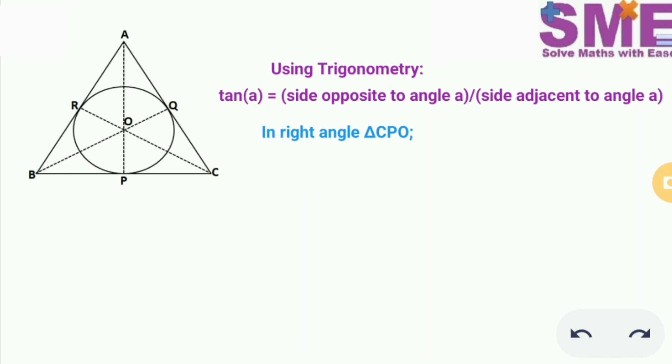In right angle triangle CPO, here we have this triangle. The tan of angle OCP will be equal to OP upon PC.